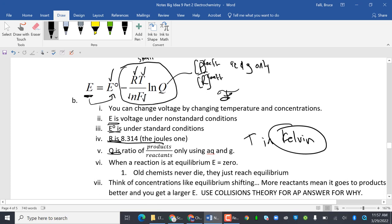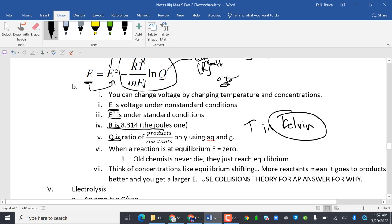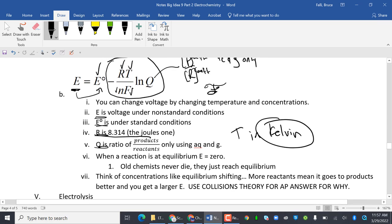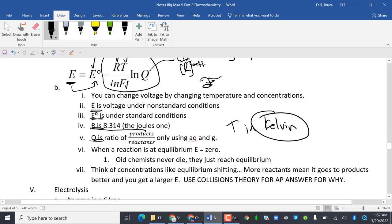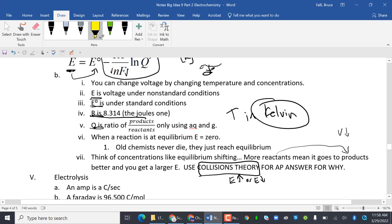When a reaction is at equilibrium, E is zero. So there's this joke and bumper sticker that's saying, old chemists never die, they just reach equilibrium. Think of concentrations like equilibrium shifting. So these concentrations, as a battery is used, the reactants turn into products. And as a battery gets used, the voltage goes down. So your battery, or whatever the system is, is better if you have a larger E. We have to use collision theory to explain why E goes down, because fewer concentration, collision theory, your amp.